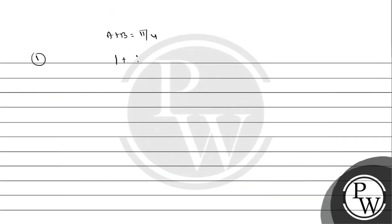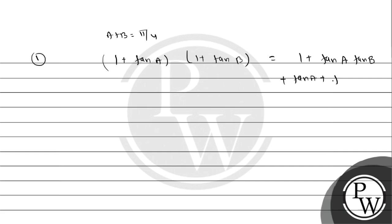We need to find the value of (1 + tan a) into (1 + tan b). If we multiply these out, we get: 1 plus tan a into tan b plus tan a plus tan b. This equals 1 plus tan a plus tan b plus tan a into tan b. We can write tan a plus tan b as tan(a+b) multiplied by (1 minus tan a into tan b), giving us 10A plus 10B upon 1 minus 10A into 10B.